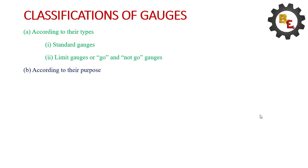Let's see the classification of gauges. According to the type: standard gauges, limit gauges, go and no-go gauges. According to the purpose: workshop gauge, inspection gauge, reference or mastering gauge.